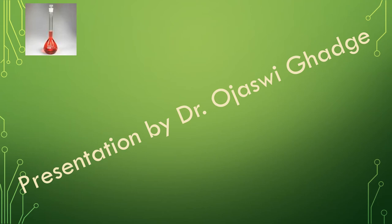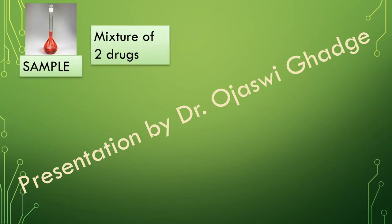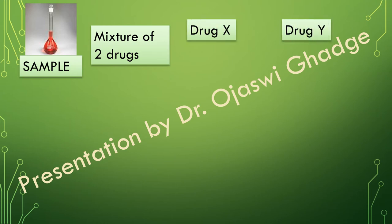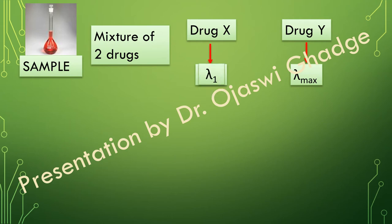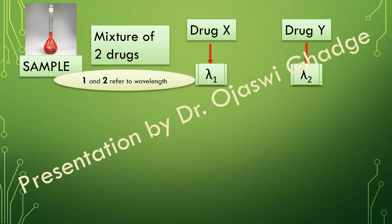If this is the sample in which both drugs are present — drug X and drug Y — drug X has its own lambda max and drug Y has its own lambda max. Since the structures of both drugs are quite different, their lambda max values will be different. Let us denote the lambda max of drug X as lambda 1 and the lambda max of drug Y as lambda 2. So, the numbers 1 and 2 refer to wavelength.